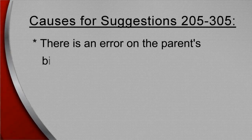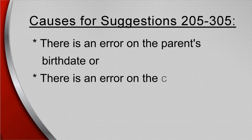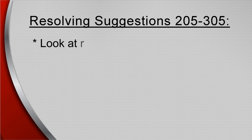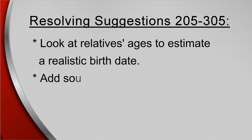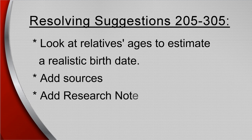Suggestions 205 and 305 are caused when there is an error with the parent's birth date or with the child's. Look at ages of parents, spouse, other children, and siblings to estimate a more correct date of birth. Add sources if you can find them. If not, add research notes to explain how you arrived at the birth year.